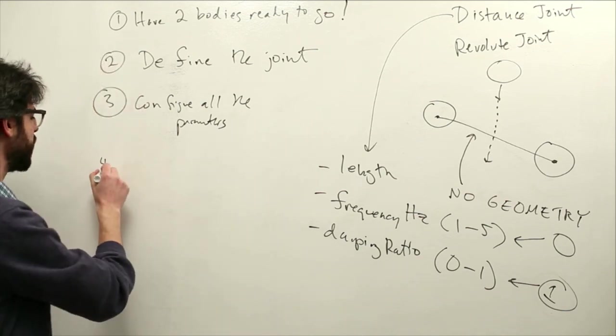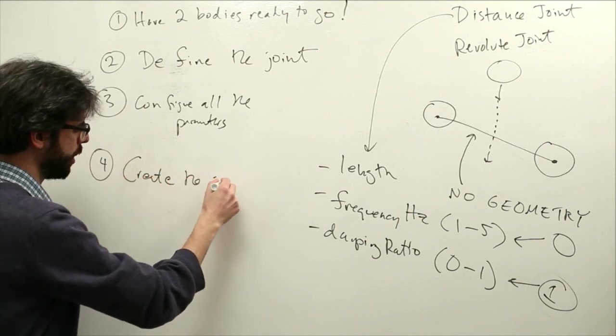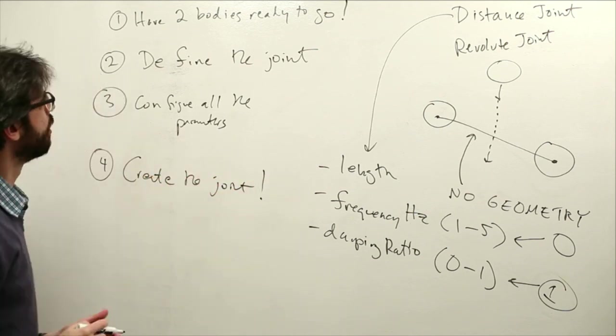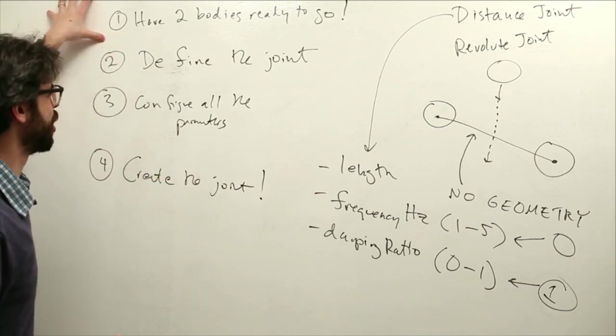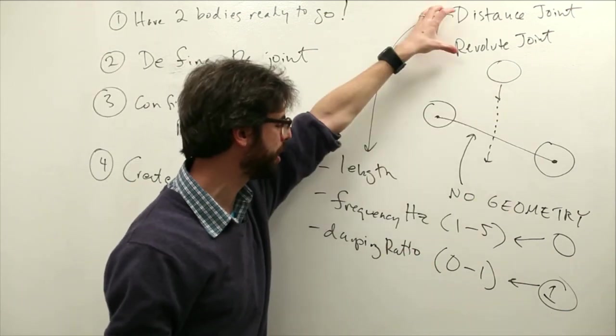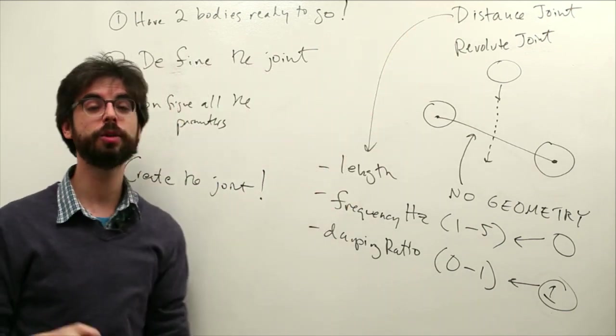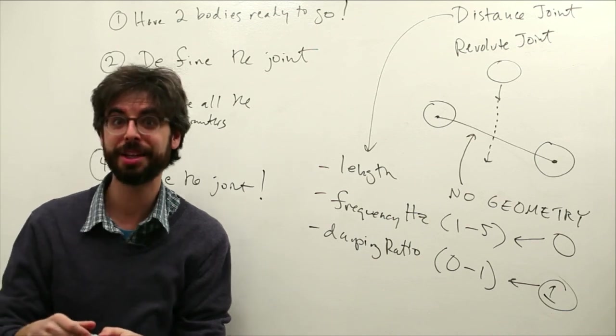So once we've configured all the parameters, then all we need to do is that last step, create the joint. So two bodies ready to go. Define a joint object, configure all these parameters for distance joint. We've just got three we're going to configure, and then create that joint. So let's actually look at an example of this in action now.